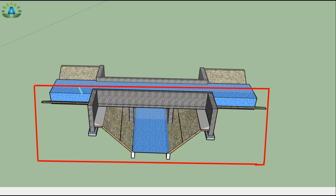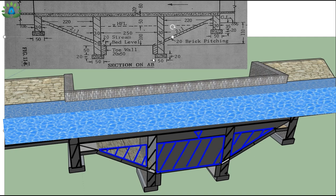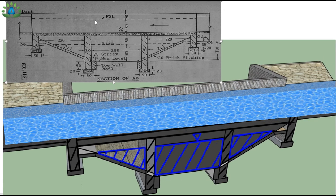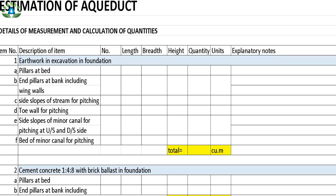When we cut the object from plane AB and remove the front portion, we get section AB. We can visualize the two pillars at the bed, the bed level, water level at 100 centimeter height on both sides, the slab extending the full length, stone pitching on both sides, a toe wall, and two end pillars at the bank on both sides.